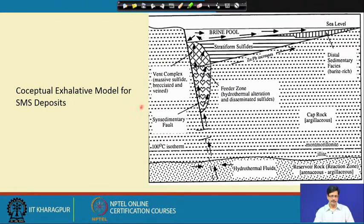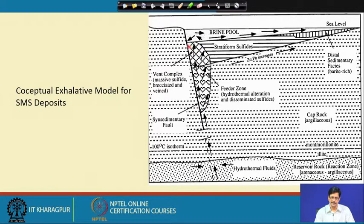This is a conceptual model for the SMS deposit where the hydrothermal fluid could be squeezed from the reservoir rock, which is the reaction zone — possibly an arenaceous rock. This hydrothermal fluid will rise through the feeder zone, where hydrothermal alteration will be very moderate or subtle. This is the vent complex of the massive sulphide, and shown here are the proximal stratiform sulphide and the distal facies, as seen in the typical morphology — this is one such model.